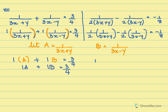For the next equation I have 1 by 2 times a, plus — actually it's minus here — 1 by 2 times b, equal to minus 1 by 8.